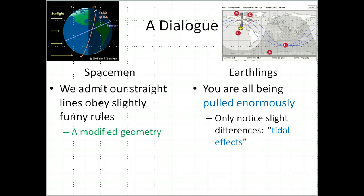The spacemen say we want to persist on our description that we're traveling along these straight lines. We do admit there's slightly funny rules for our straight lines, a modified kind of geometry, but that was a good explanation in the case of the travelers and we want to persist in it.